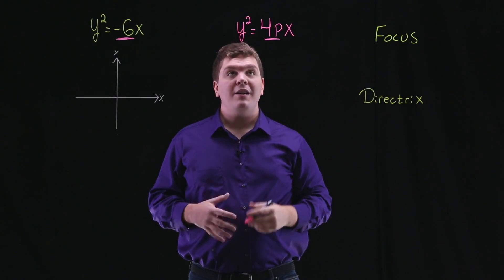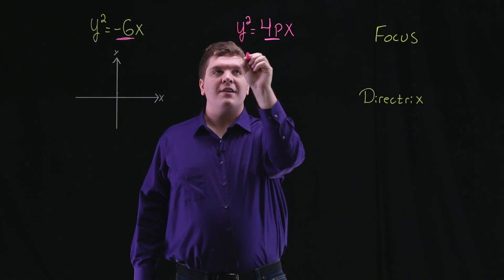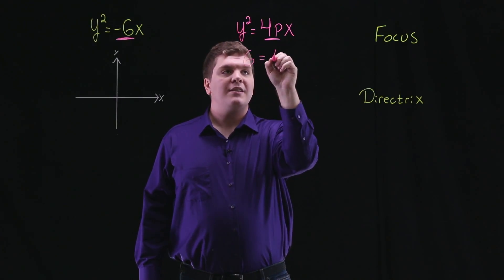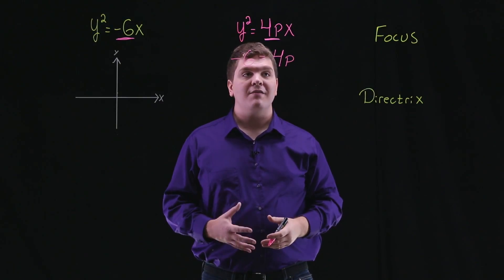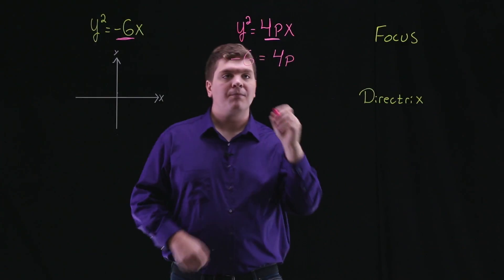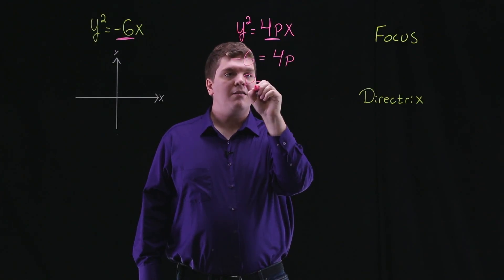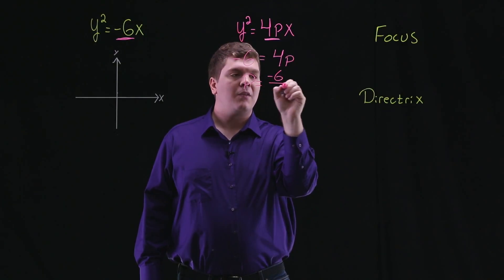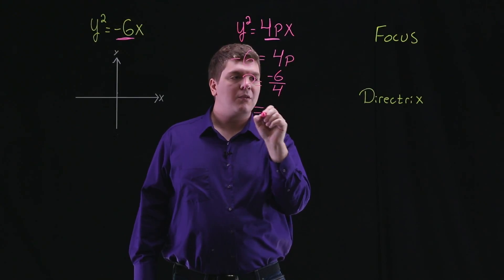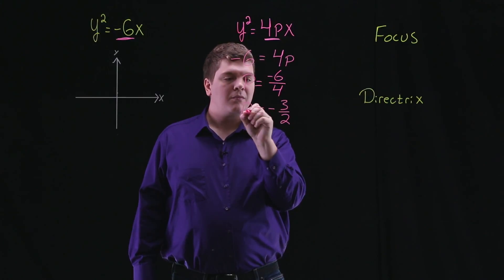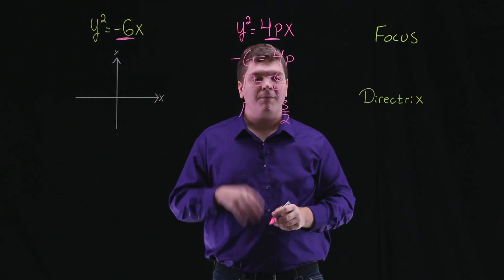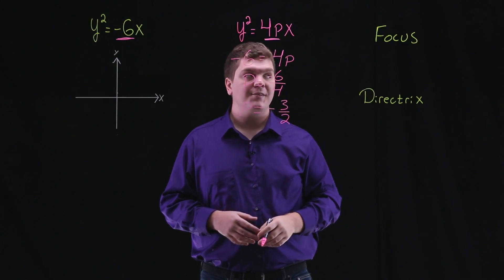We want these two to be equal, so we'll solve the equation -6 = 4p. We can divide both sides of the equation by 4, and we're left with p = -6/4, which simplifies to -3/2.